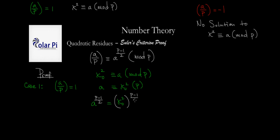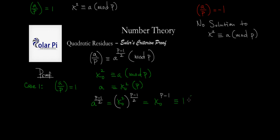Using exponent rules, we can simplify this a little bit: we can write it as x₀ to the power 2 times (p minus 1) over 2, which is just x₀ to the power of p minus 1. And as soon as I see this, I think of Fermat's little theorem, which tells us that x₀ to the power of p minus 1 is congruent to 1 mod p.